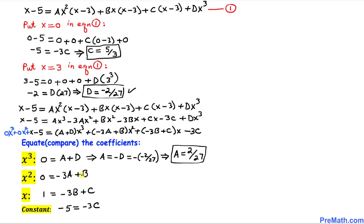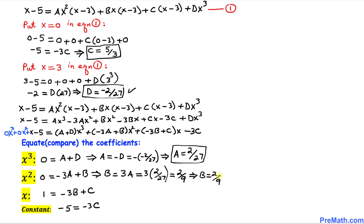From 0 equals a plus d, we get a equals negative d. Since d equals negative 2 over 27, then A equals 2 over 27. From 0 equals negative 3a plus b, we get b equals 3a equals 3 times 2 over 27, which reduces to 2 over 9. So B equals 2 over 9. We now have all four constants and don't need the remaining equations.